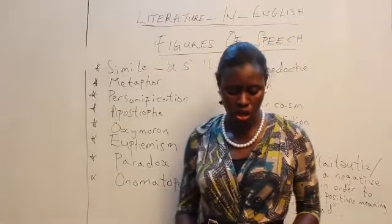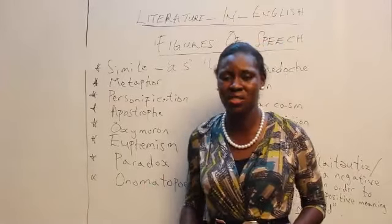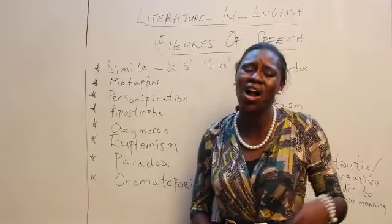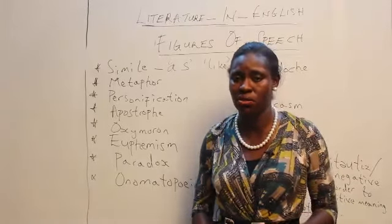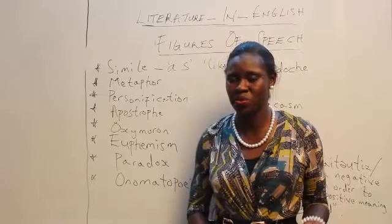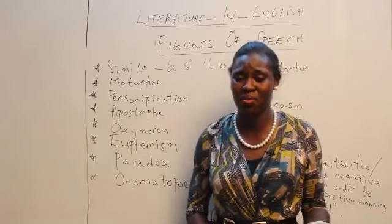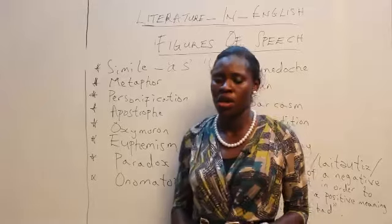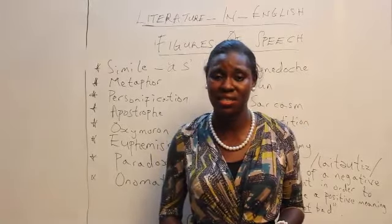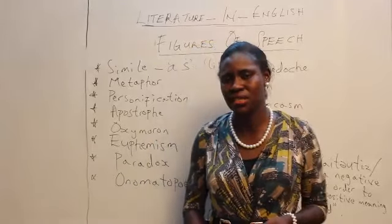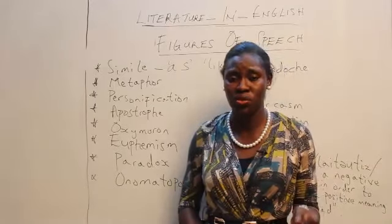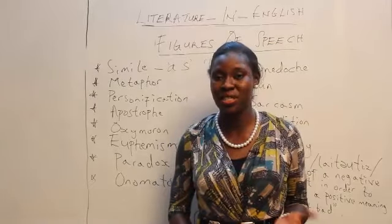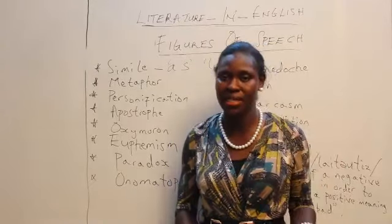Next up, we will be looking at oxymoron. Oxymoron is the use of two contrasting words to lay emphasis on an idea. For example, 'we all heard the bittersweet news about her marriage' — using 'bitter' and 'sweet' together to express something in between. 'The news about her pregnancy is now an open secret' — it was a secret before, but the news filtered to everyone's ears. 'He was in a pretty bad shape' — 'pretty bad' is also an oxymoron.